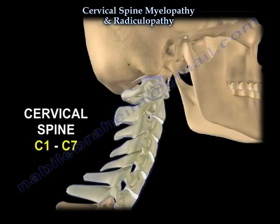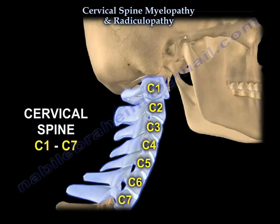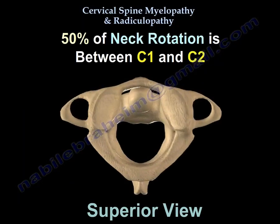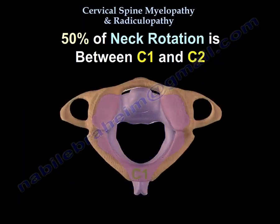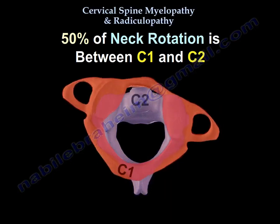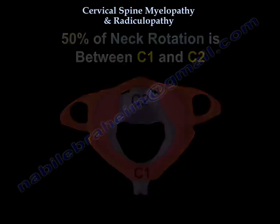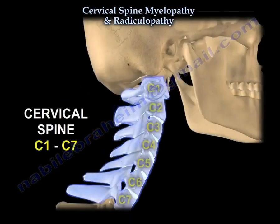Where does rotation of the C-spine mostly occur? C1 and C2 — about 50% occurs at C1-C2. Where does flexion-extension of the C-spine mostly occur? C4-C5 and C2-C3.